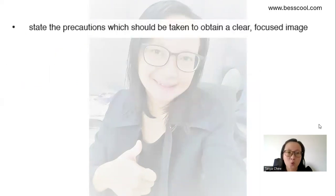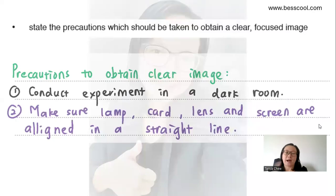After that, state the precautions which should be taken to obtain a clear and focused image. So these are my precautions. So I have to conduct the experiment in a dark room because I don't want any light sources to interfere with the light source from my lamp. And I have to make sure that the lamp, the card, the lens, and the screen are aligned in a straight line because I want to see the image of the lamp on the screen. That is why I make sure that they are in the straight line.